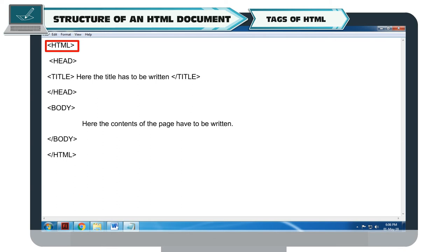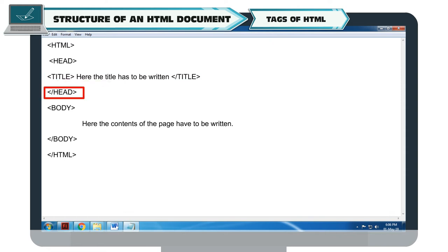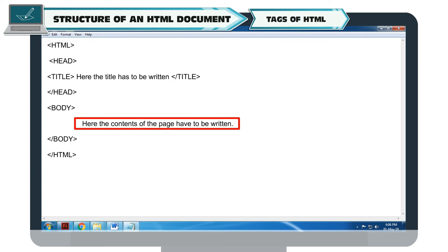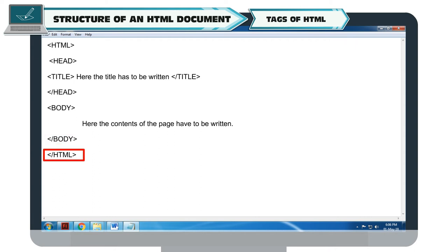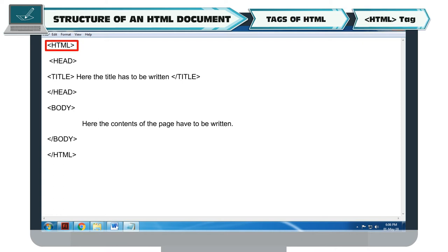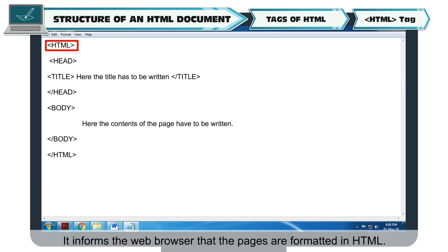The basic HTML document structure includes the HTML, Head, Title, and Body tags. The title is written between the opening and closing title tags, inside the head section. The contents of the page are written between the opening and closing body tags, all enclosed within the opening and closing HTML tags. All HTML codes are written within the opening and closing HTML tags.